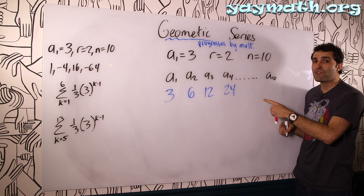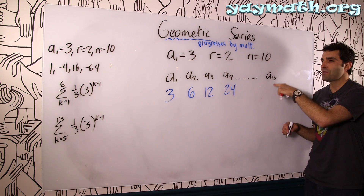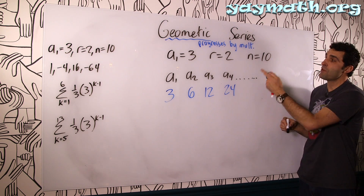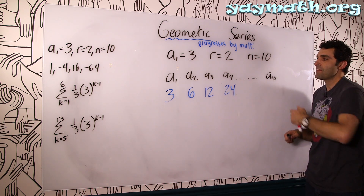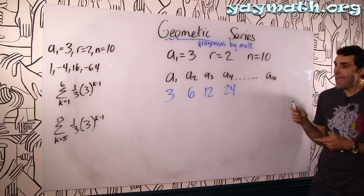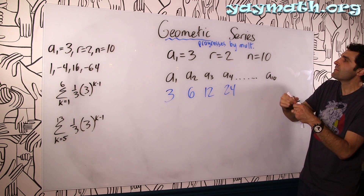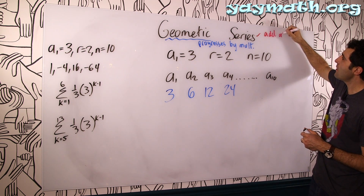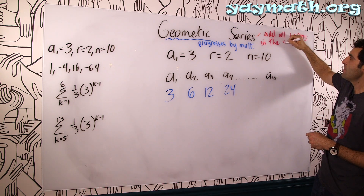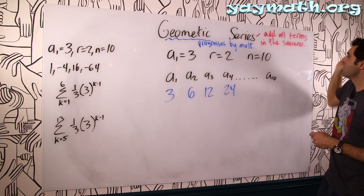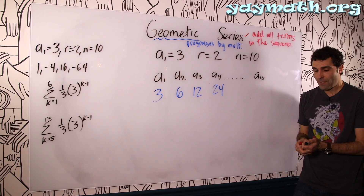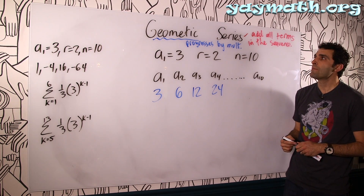You can already see that would be kind of a drag — times 2, times 2, times 2. We could do that using calculators and add them all up, and it wouldn't be so bad. But a geometric series means add all terms in the sequence. We could do this manually, but I'm going to offer you a formula now for a geometric series — the sum of a geometric sequence.